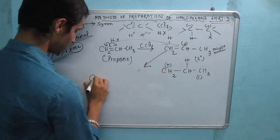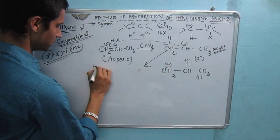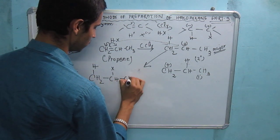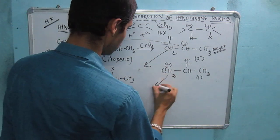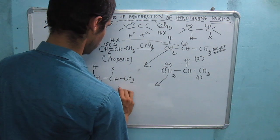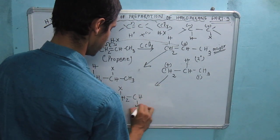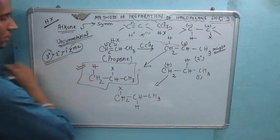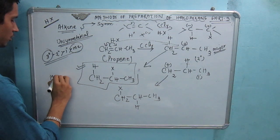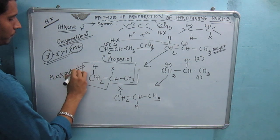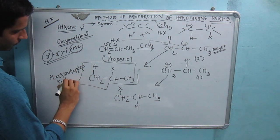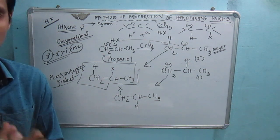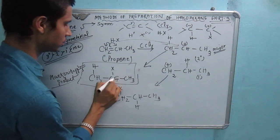So, the major product of the halogen acid addition — the halide adds to give: CH2 bond H, CH bond Cl, and it is X bond CH3. Similarly, the R product is CH2–X–CH–H–CH3. The major product follows Markovnikov's rule, where the halogen adds to the carbon with fewer hydrogens.